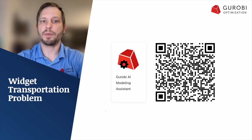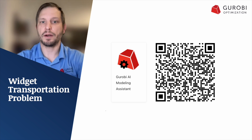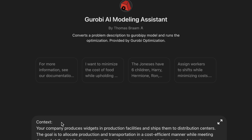Now that we have a problem statement prompt ready to go, let's use the modeling assistant to formulate, code, and solve our model to get the optimal decision for our widget transportation problem. You can use the QR code to get to the Gurobi AI modeling assistant GPT. We'll now see how the Gurobi AI modeling assistant picks up where the prompt engineer left off, providing us with a problem description of our widget production problem.